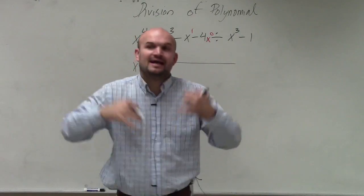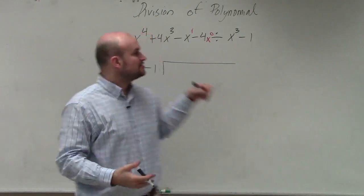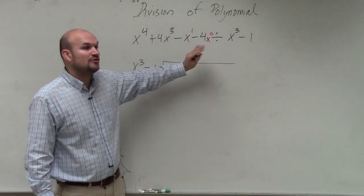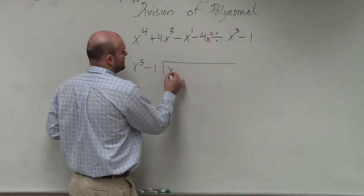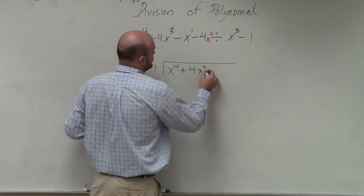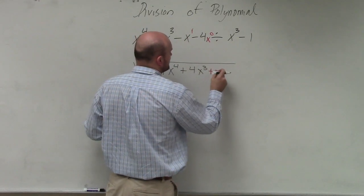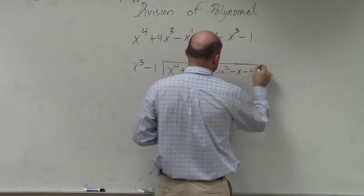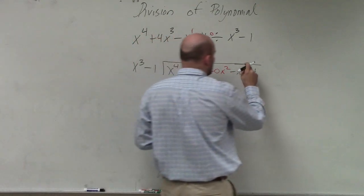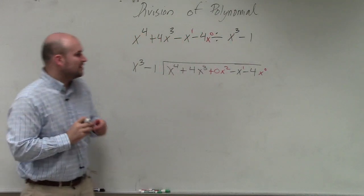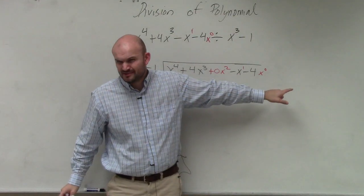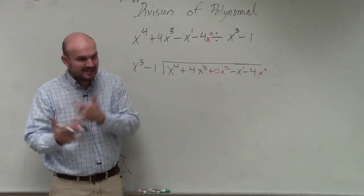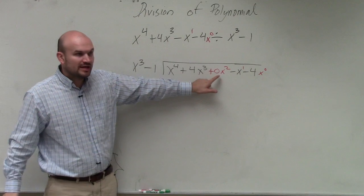This is not something that's necessary, but I highly recommend you do this. When you're writing them in there, make sure you have them in standard form and make sure you include all the missing values. So x to the fourth plus 4x cubed plus 0x squared minus x minus 4. So if you have a missing term, I highly recommend, while you're learning this complex process, to use space values.